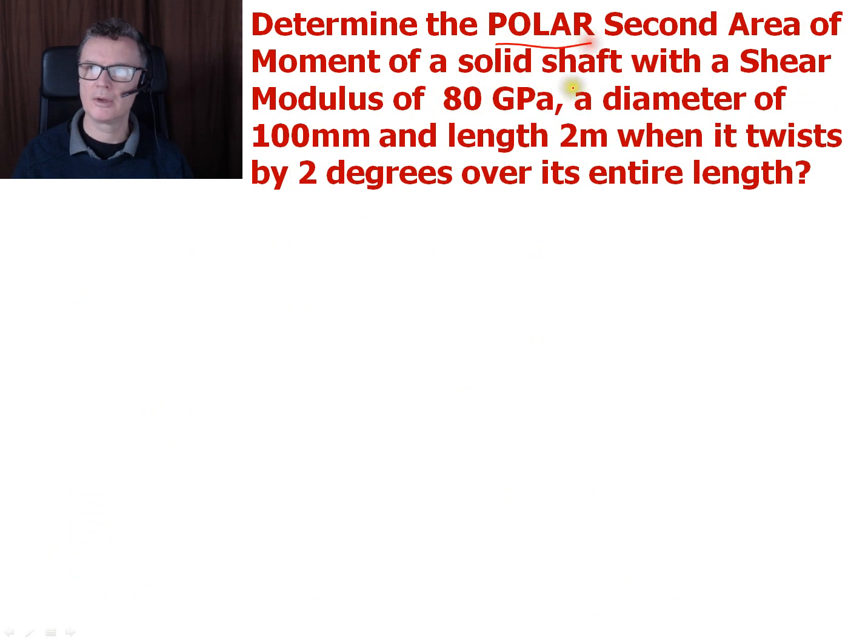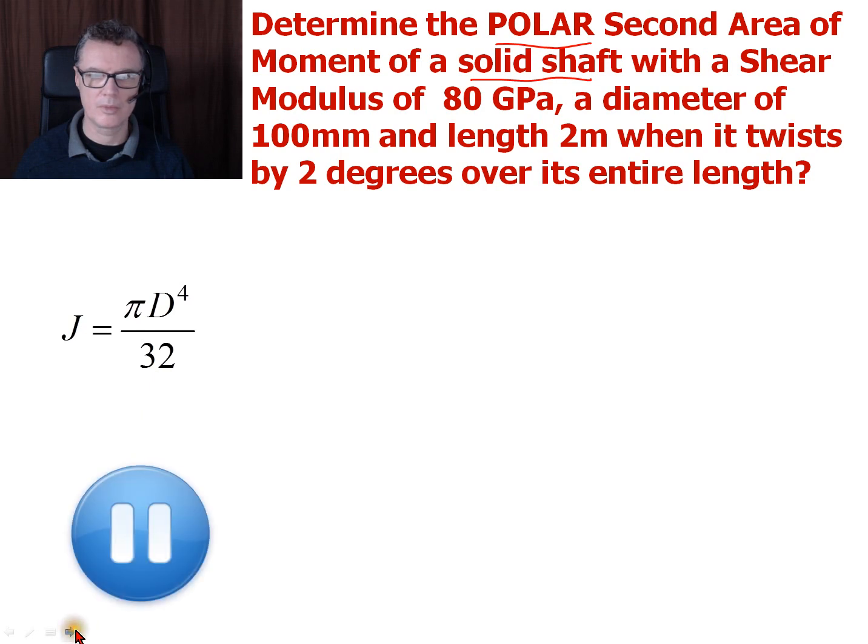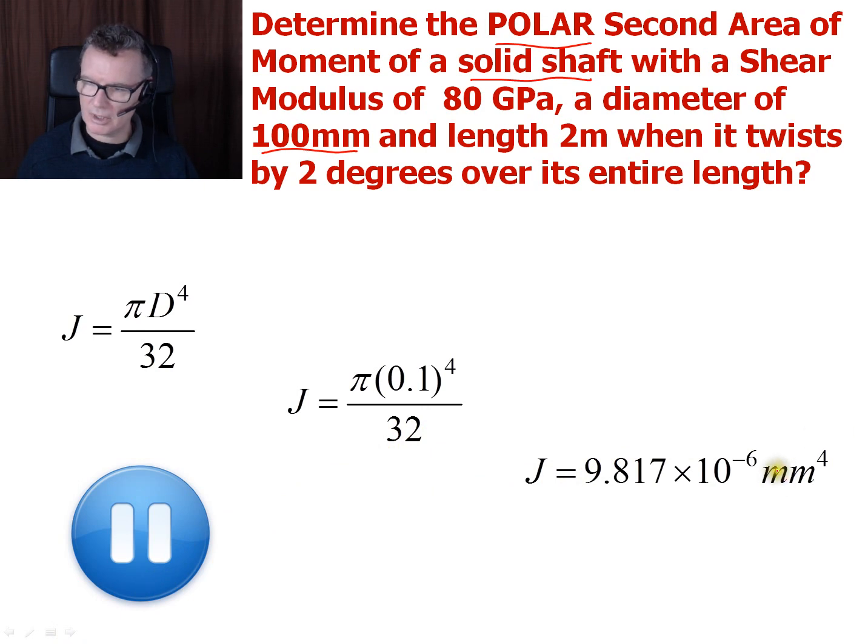Now we want to find the polar second moment of area. Okay, so assuming that we've got an ordinary shaft here, we've told it's a solid shaft. So we can assume it's circular. So just look up our polar second moment of area equation, which you should find in your formula booklet. So that gives me π d to the 4 divided by 32. So pause the video, put that in your calculator and see if you can get the right answer. So here we are using diameter, so we're going to use the 100 millimetres. I'm going to work in SI units again, so 100 millimetres is 0.1 metres. So that gives me the answer in terms of metres to the power 4.